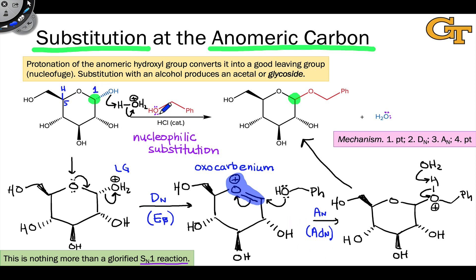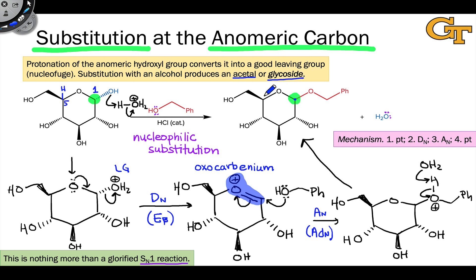From the nucleophile's perspective, we have put a sugar onto the nucleophile — this is called glycosylation, and the resulting sugar-substituted nucleophile is called a glycoside. When the nucleophile is an alcohol, this is simply an acetal, and we can see the acetal functional group in the product: the anomeric carbon is now linked to two alkoxy groups.